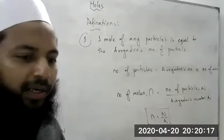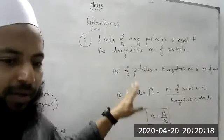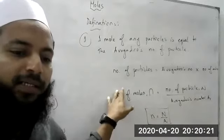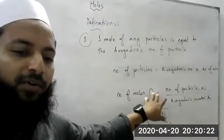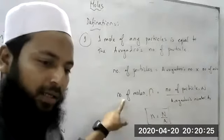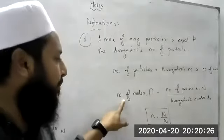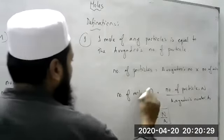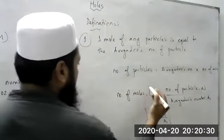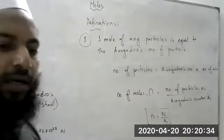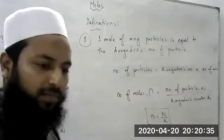So the first formula is: one mole of any particle equals Avogadro's number of particles, meaning the number of particles equals Avogadro's number into the number of moles, and so number of moles equals number of particles N divided by Avogadro's number. That is the first formula.